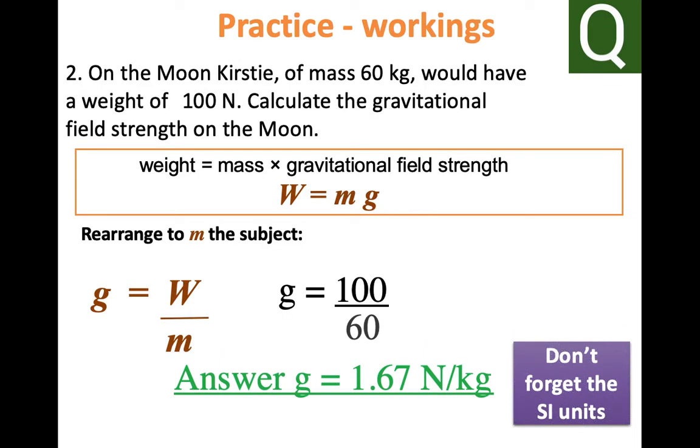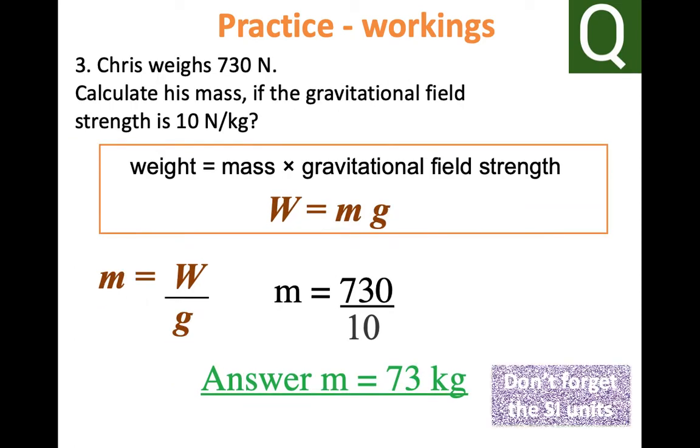For question 2, we are trying to calculate gravity on the moon, so it is going to be less than that on Earth. We have a mass of 60 kilograms and a weight of 100. We divide the weight by the mass and our answer is 1.67 newtons per kilogram.